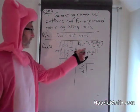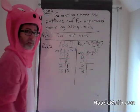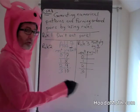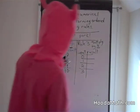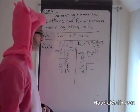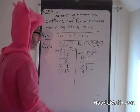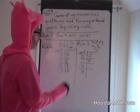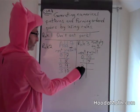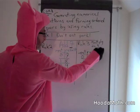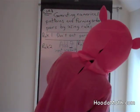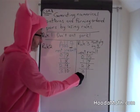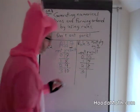Now we have another rule here: multiply by 4. Our input is 0. We multiply that by 4, we get 0. We start with 1 as our input, multiply by 4, we get 4. Rule 3, multiply by 4, begin with 2, multiply by 4, we get 8. And once again, we start with 3, multiply by 4, we get 12.